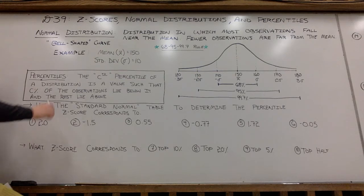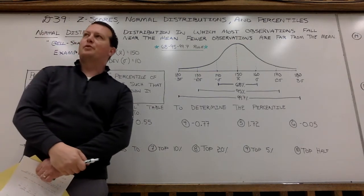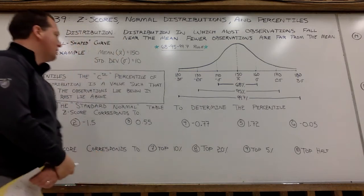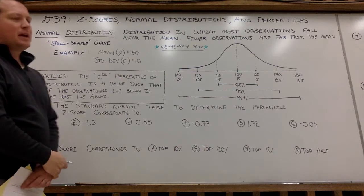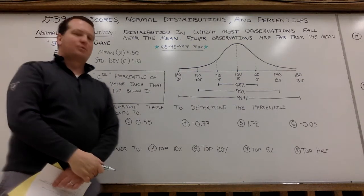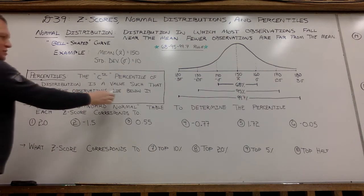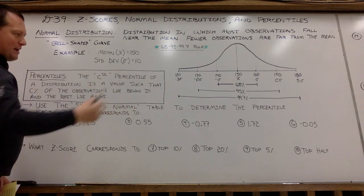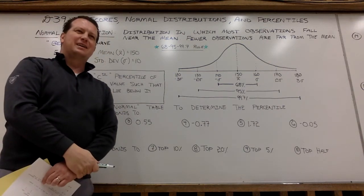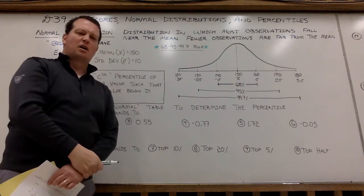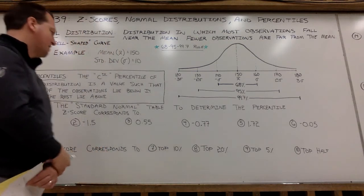The other item we're going to talk about today are percentiles. So if you want to compare yourself to other people in a data set, you can figure out the percentile at which you lie. And if you're at, say, the 80th percentile, what that means is 80% of the observations lie below where you're at. So if you're at the top percentile, the 99th percentile, that means 99% are below you. So that is how percentiles work.